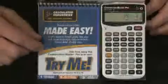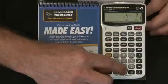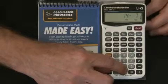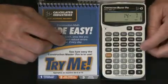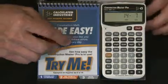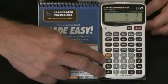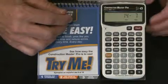The Construction Master Pro also has a paperless tape function to let you review your last 20 entries, and a handy backspace key to edit mistakes. It's got four memory storage locations, and it works as a regular math calculator with auto shutoff.